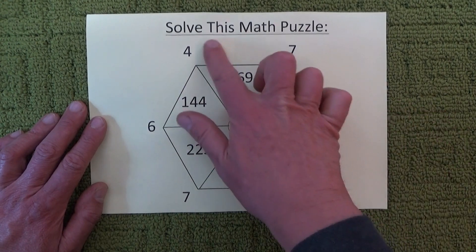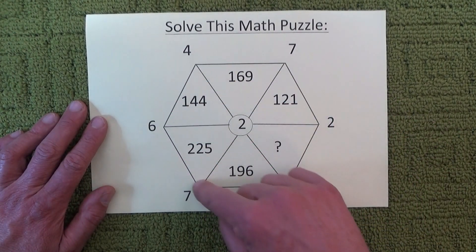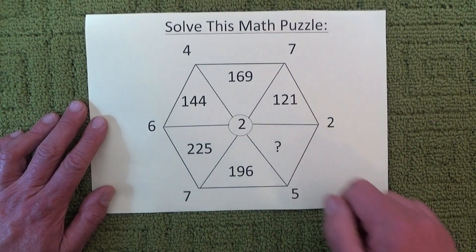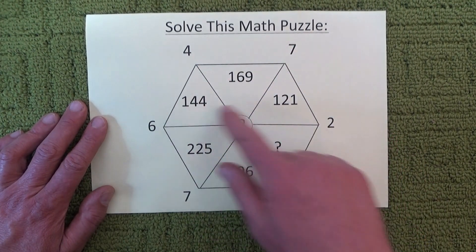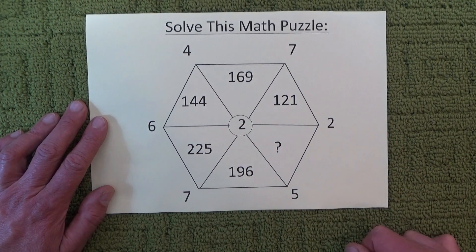Hi there. Today I'd like to share with you this great math puzzle. This math puzzle has a hexagon in the middle and six numbers on the outside of the hexagon.